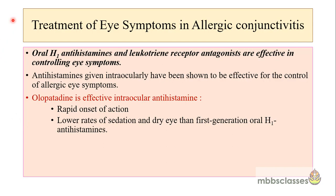Since patients with allergic rhinitis also have ocular symptoms, two groups of medicines are found to be effective: oral antihistamines and leukotriene receptor antagonists are effective in controlling eye symptoms. Antihistamines are also available as eye drops and given intraocularly, and are found to be effective for control of allergic eye symptoms. The drug available as an eye drop is olopatadine, which is effective because of its rapid onset of action and lower rates of sedation and dry eye.